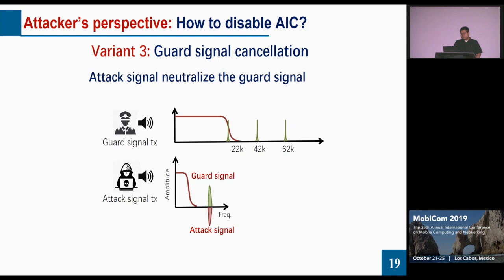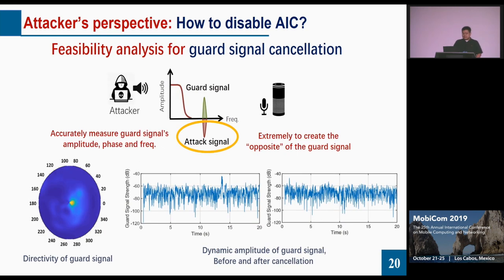The third variant is the guard signal cancellation attack, where the attacker tries to neutralize the guard signal. To do that, the attacker must accurately measure the guard signal's amplitude, phase, and frequency — but the amplitude is highly dynamic. Our feasibility analysis shows that it is extremely difficult, if not impossible, to create the exact opposite of the guard signal for cancellation.